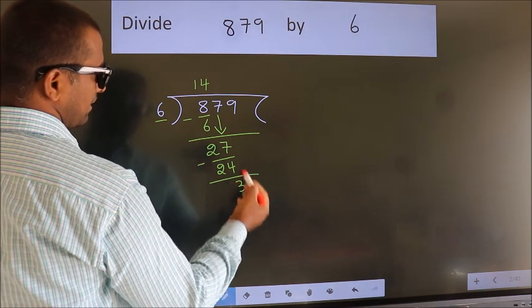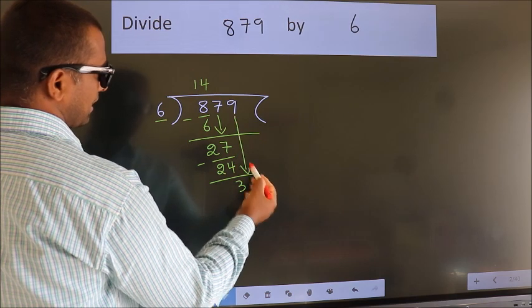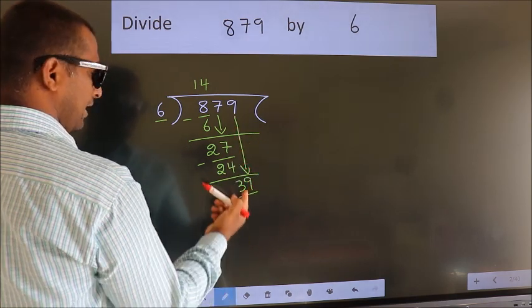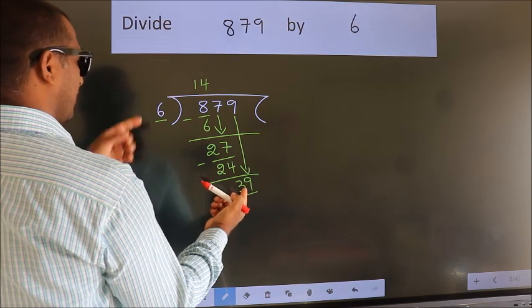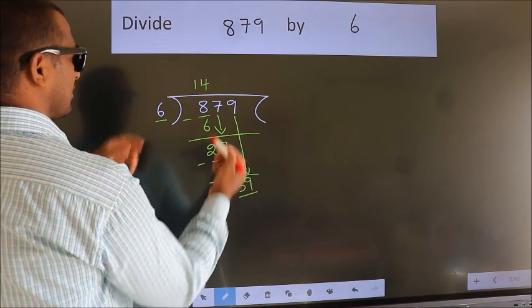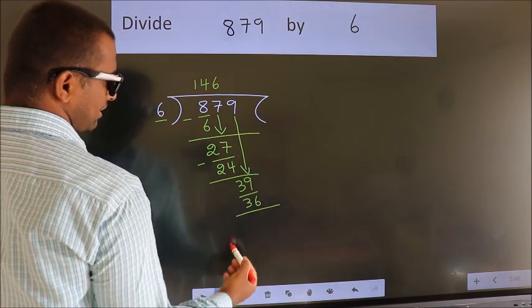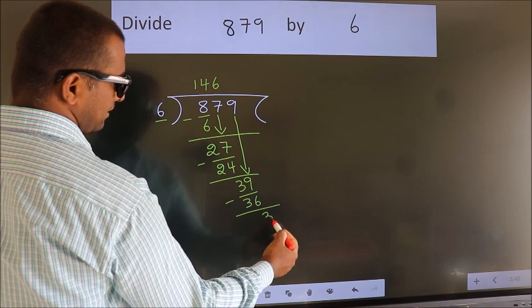After this, bring down the beside number. So 9 down. So 39. A number close to 39 in 6 table is 6 times 6 is 36. Now we subtract. We get 3.